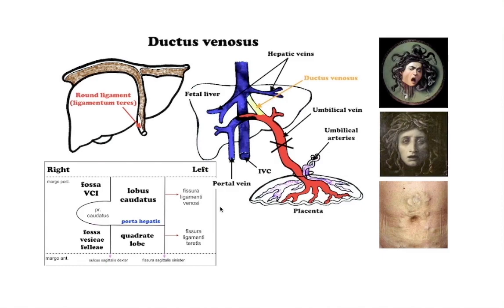During fetal life, the ductus venosus is responsible for shunting a majority of blood flow of the umbilical vein directly into the inferior vena cava, transporting oxygenated blood from the placenta to the fetus. After birth, the umbilical vein closes as physiologic neonatal circulation begins. In the presence of portal hypertension, the umbilical vein may recanalize to allow portosystemic collateralization through the abdominal wall, known as caput medusae.